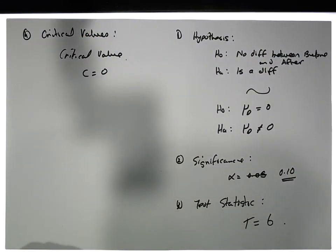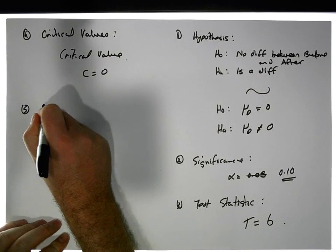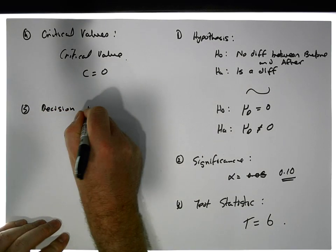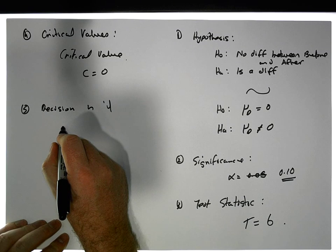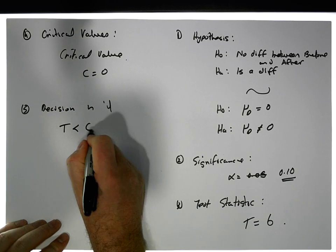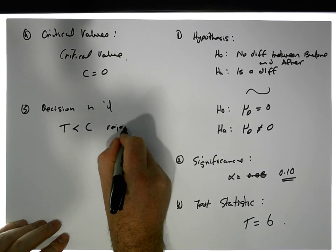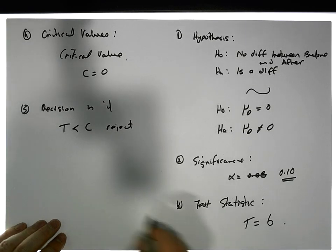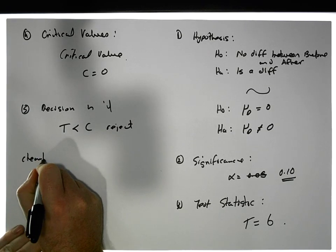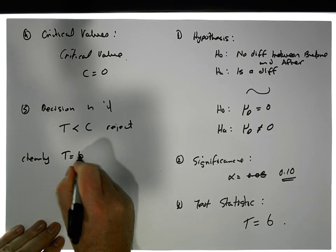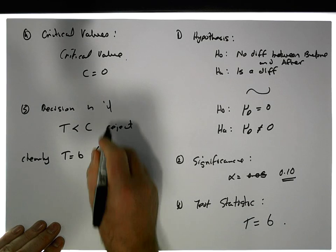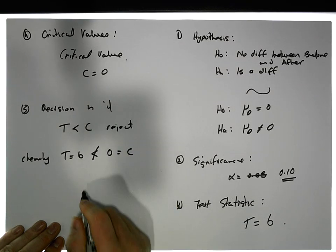The decision is if the test statistic is less than the critical value, we reject. Clearly we have that T equals six, which is not less than zero, which is equal to C. So the test statistic is not less than C.